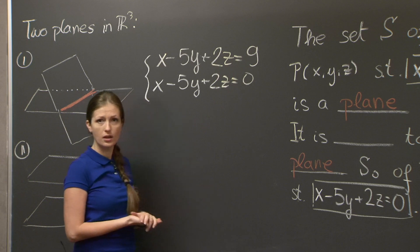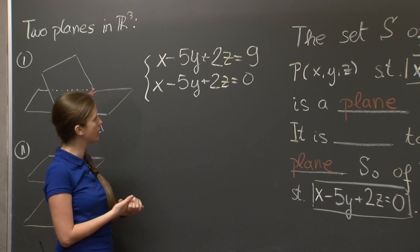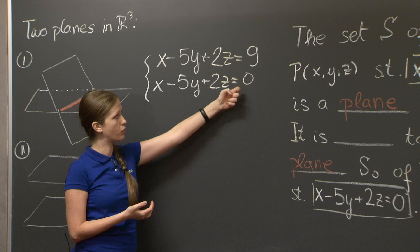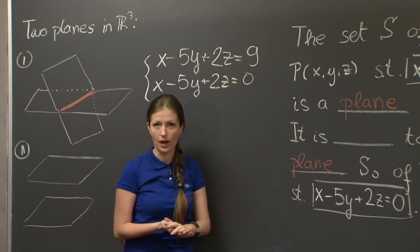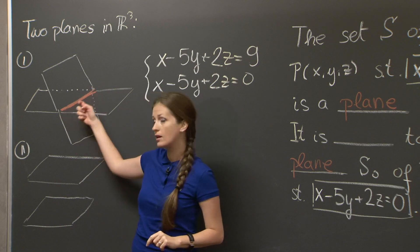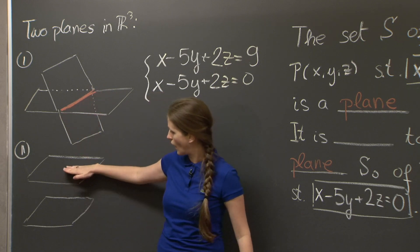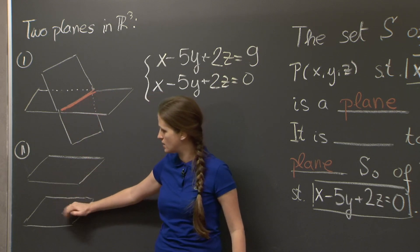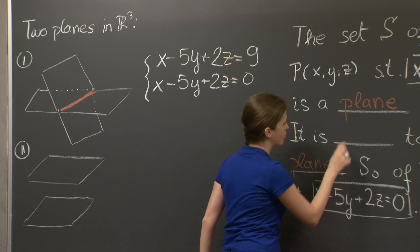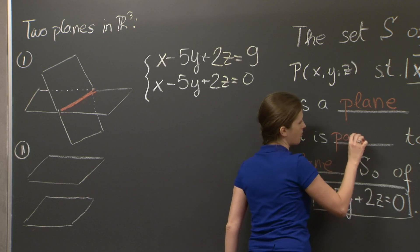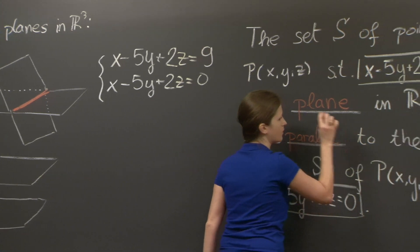There cannot exist numbers x, y, and z such that this combination of them produces 0 and the same combination of them produces 9 at the same time. So this red line here doesn't exist. And the situation of these two planes, S and S₀, is this one: they're parallel. So let's add the word parallel in here.